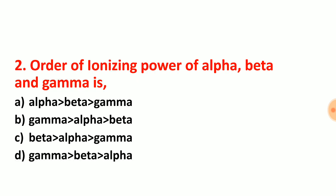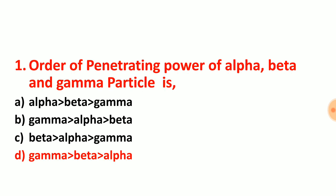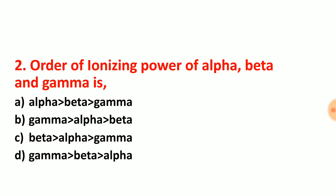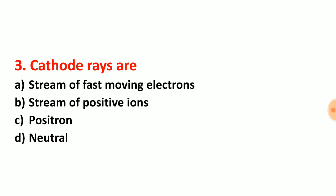Now let us see question number 2: order of ionizing power of alpha, beta and gamma. Ionizing power of alpha, beta and gamma is just opposite of penetrating power. So more mass and more size means more ionizing power. Option choice A is the correct answer — alpha has maximum ionizing power, then beta, then gamma.